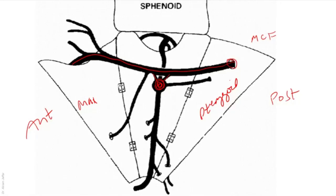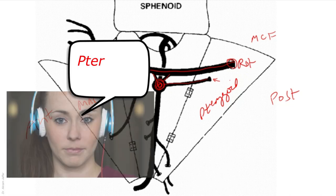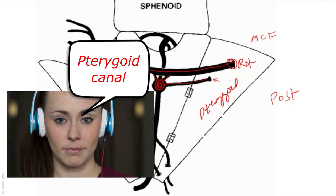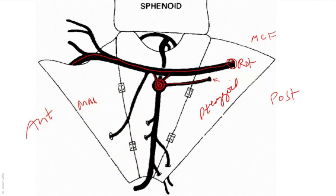Now, the maxillary nerve passes through foramen rotundum. What about this other foramen? It is in the posterior wall, below and medial to foramen rotundum, and you can see that the nerve passing through it is connected to the pterygopalatine ganglion. That is the pterygoid canal — the opening of the pterygoid canal.